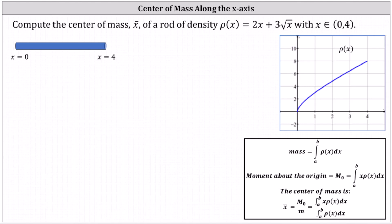Compute the center of mass of a rod of density ρ(x) = 2x + 3√x, with x on the open interval from zero to four. We can think of the rod as being placed along the x-axis from x equals zero to x equals four. The center of mass would be the balance point — the point where you could place your finger and the rod would balance horizontally.